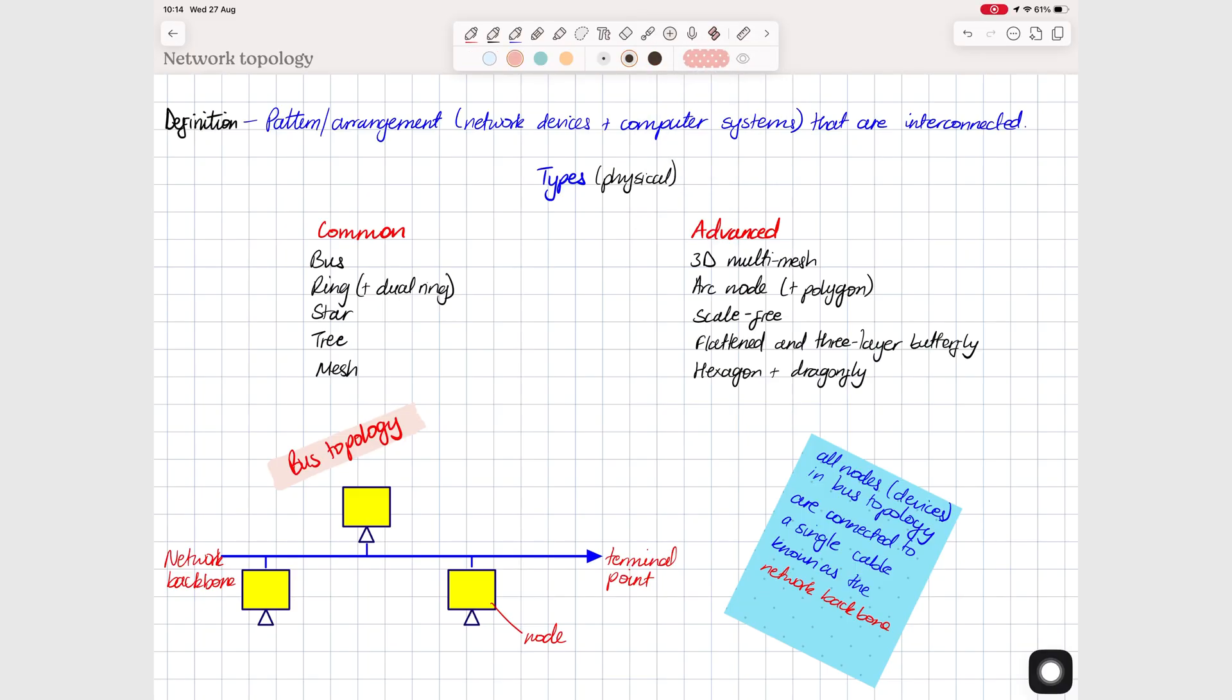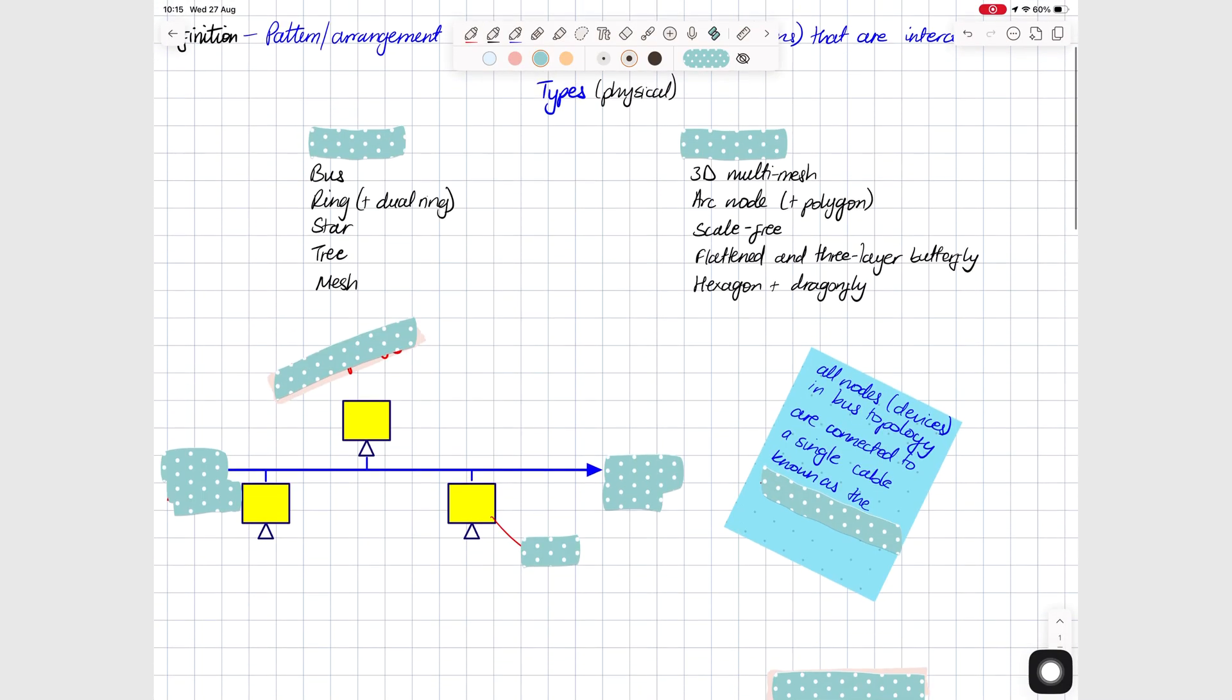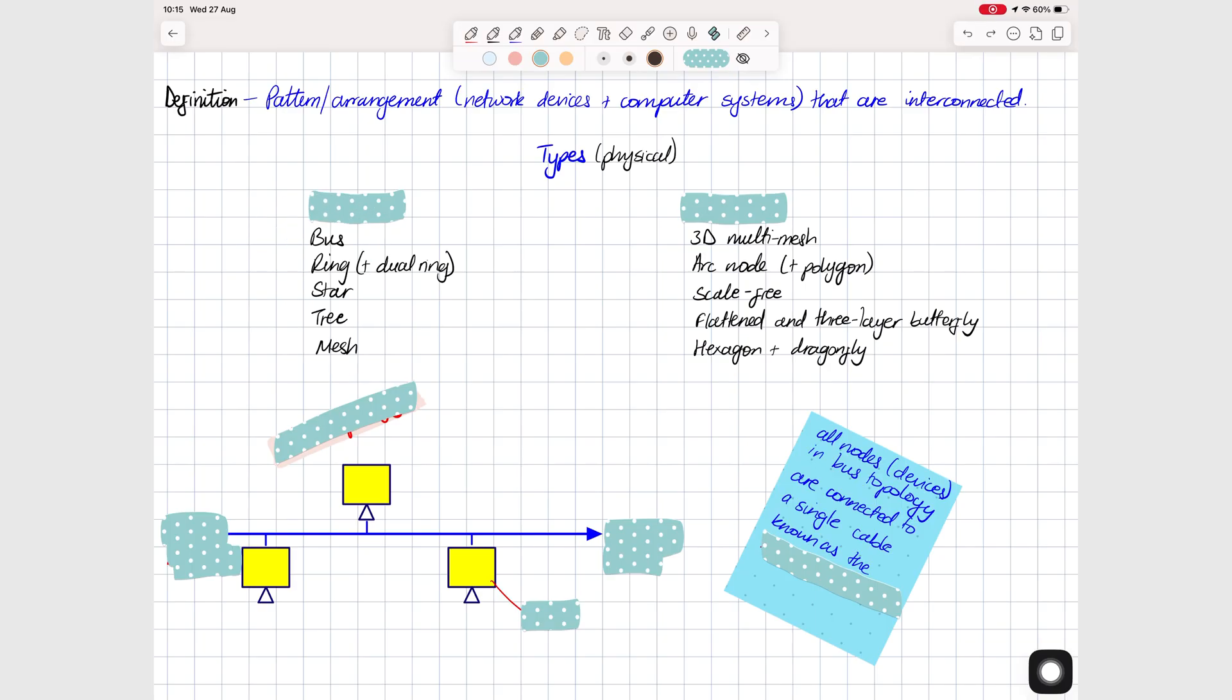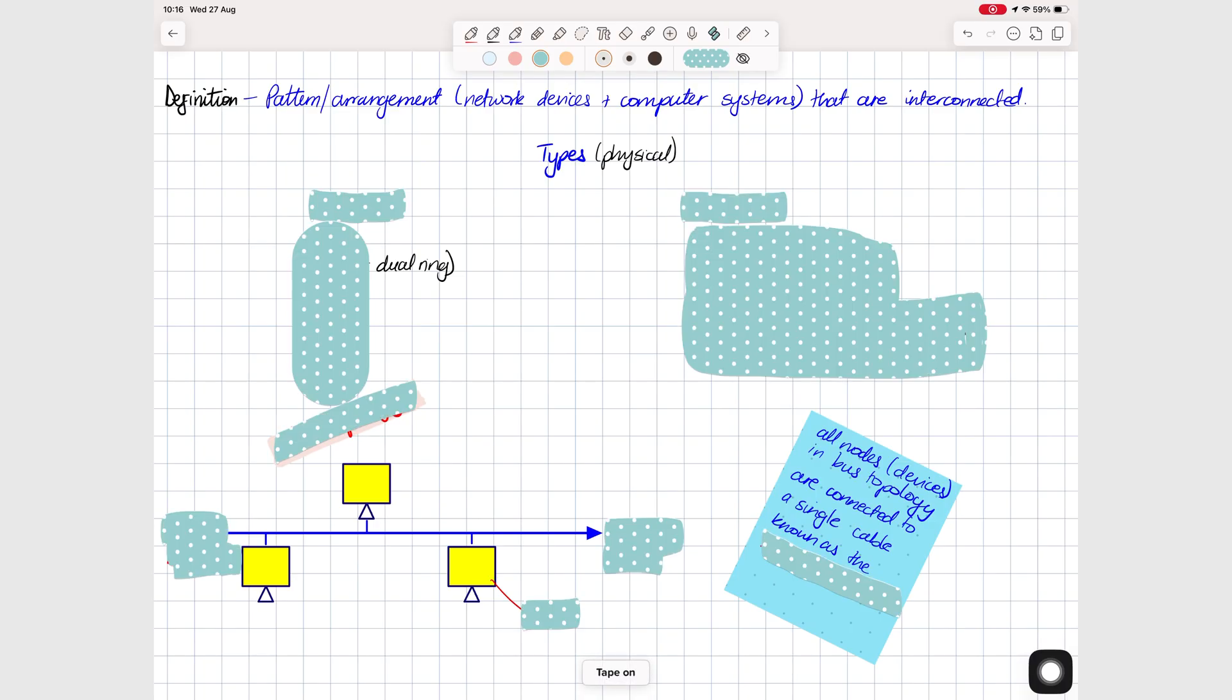Another feature worth getting Notability 15 for is tape. It's not perfect, but it's functional. You get a handful of patterns and colors. You can draw freehand or straight, and you can toggle all the tape on and off with just one tap. What more can you ask for?